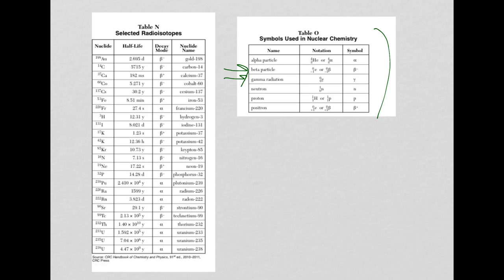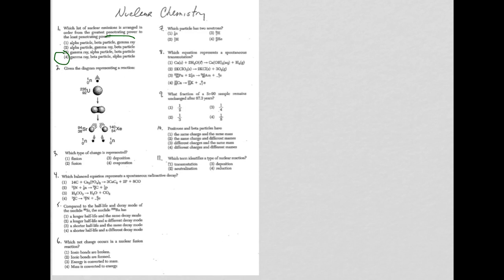Beta particles, which are essentially electrons, have a minus charge. Alpha particles are sometimes referred to as helium nuclei - two protons, two neutrons. It's the heaviest. So gamma radiation, beta, and then alpha, which is choice four.